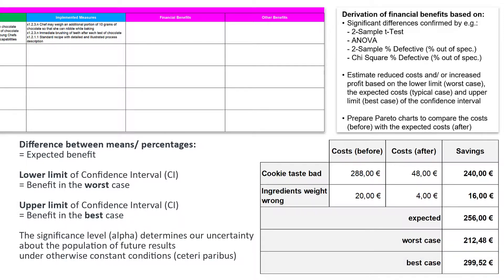Based on these confidence limits, we could calculate how much more cookies we can sell in the worst and the best case in the future and derive the profit from this. Furthermore, we can transform cardinally scaled data down to nominal scale level, or we can use originally nominal scale data to detect changes in the defect rate and evaluate them in monetary terms. The basis for this could be the reduced percentage of defective cookies outside the specification, and the two-sample percentage defective test offers the statistical verification of our defect reduction.